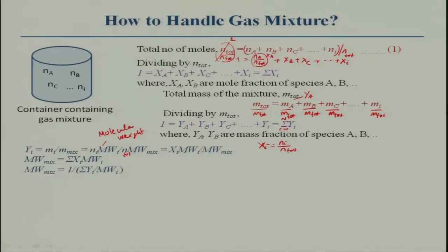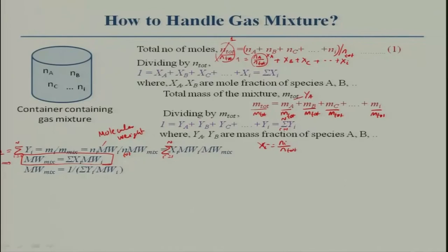Summing that expression gives: MW_mixture = summation of X_I × MW_I (Equation 1). This means if you know the molecular weight and mole fraction of individual species in a mixture, you can find the molecular weight of the mixture. Similarly, the molecular weight of the mixture in terms of mass fraction is: 1 / MW_mixture = summation of Y_I / MW_I (Equation 2). I suggest you derive that expression yourself.